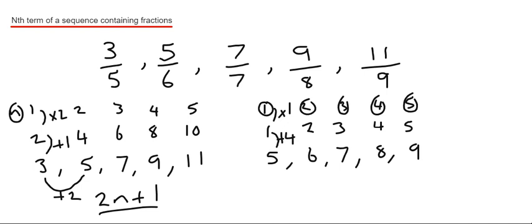And you see that works for each one. 2 add 4 is 6. 3 add 4 is 7. 4 add 4 is 8. 5 add 4 is 9. So the nth term of this sequence then would be 1n plus 4, which you can just write down as n plus 4.